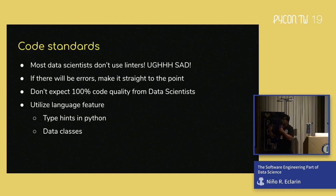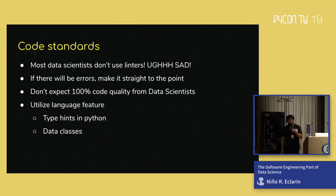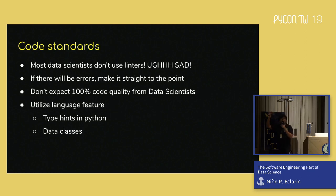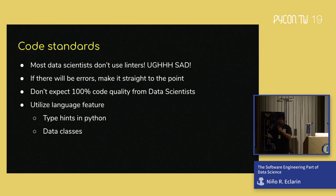If there will be errors, make the errors straight to the point. As a software engineer, be considerate — do not expect 100% code quality from data scientists. It's not their job; it's your job. Utilize language features. We use type hints — Python is moving toward a data-typed language. There are also data classes, and we're going to show several examples of that later.